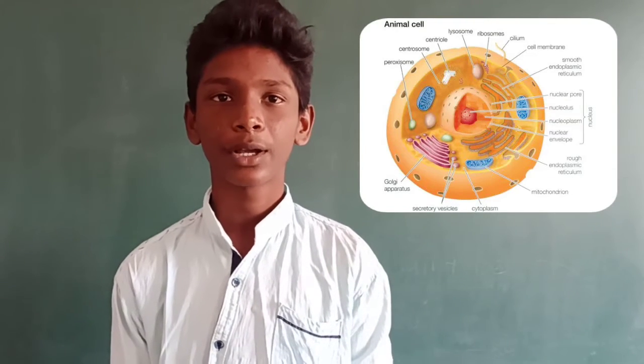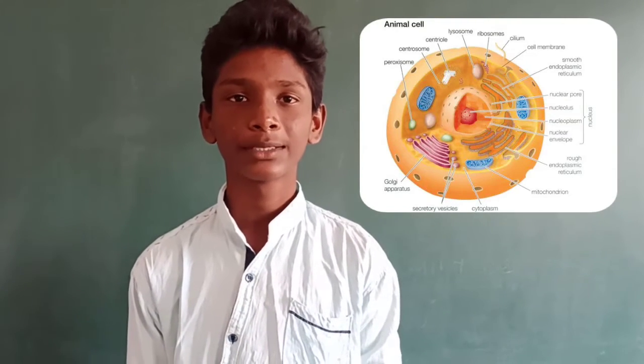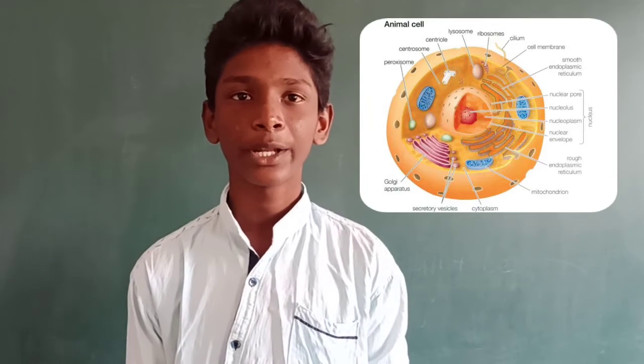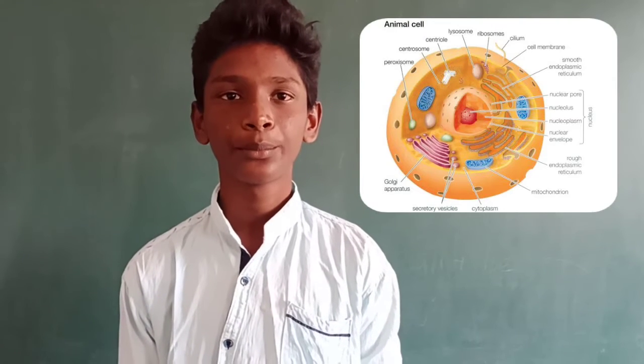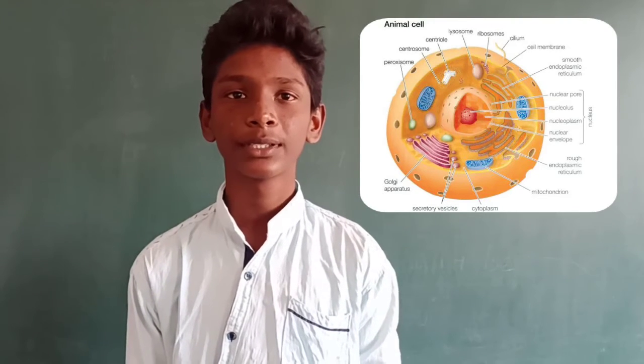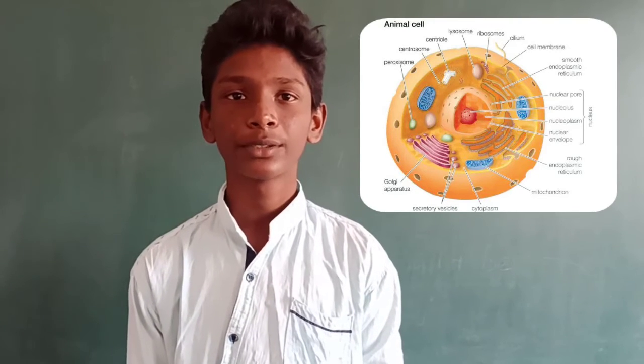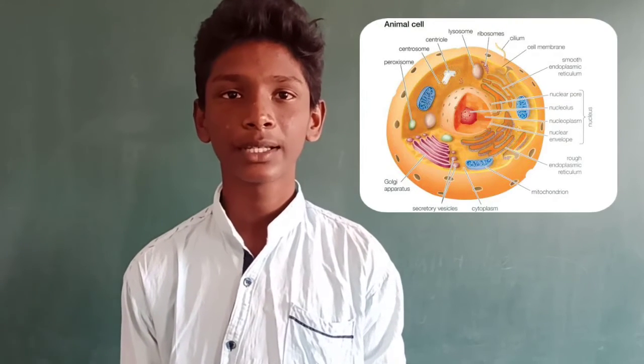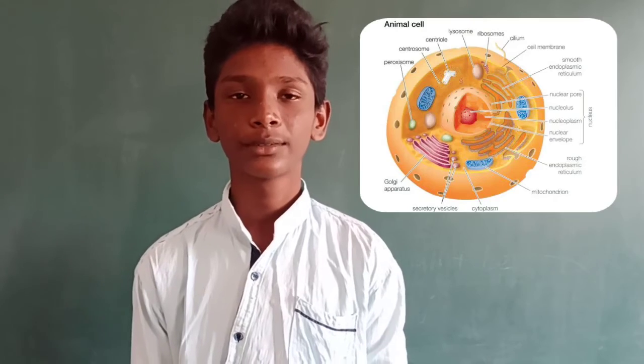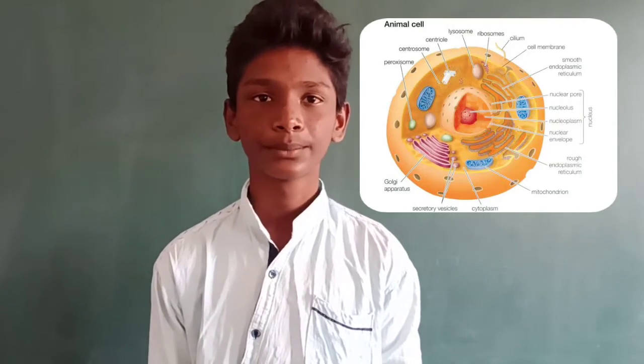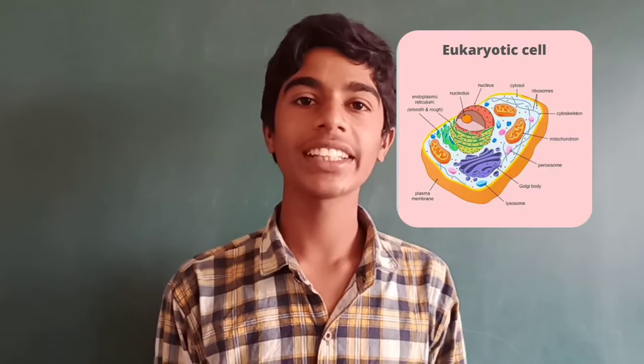In an animal cell, the cell wall is absent and chloroplasts are absent, so the cell cannot perform photosynthesis. Vacuoles are small in size. Centrioles are present. Now, about the eukaryotic cell: